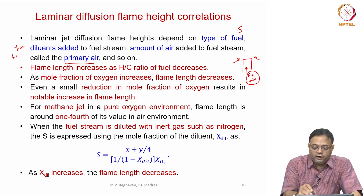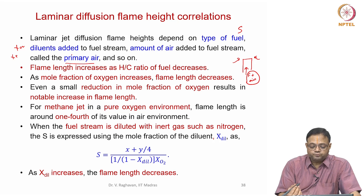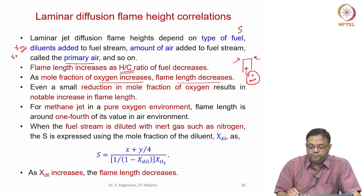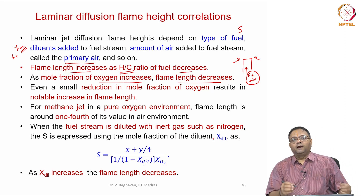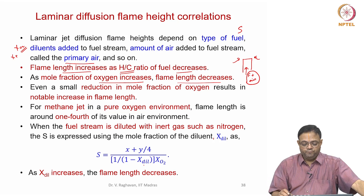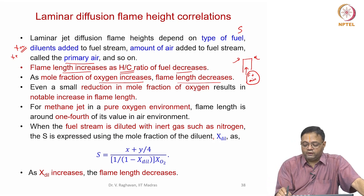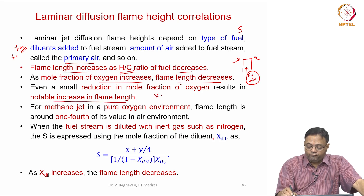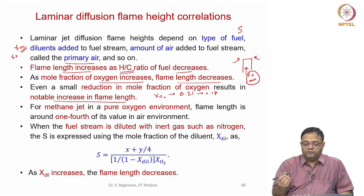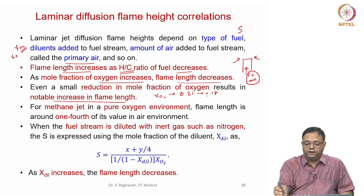When diluents are added, the flame height actually increases. When the oxygen mole fraction increases, the flame length decreases. Regarding the fuel: if the H/C ratio decreases, the flame height increases — that is, hydrogen is highly reactive, so lower hydrogen-to-carbon ratio means greater flame height. A small reduction in XO₂ from 0.21 to 0.18 results in a notable increase in flame height, while increasing it from 0.21 to 0.3 decreases the flame height.